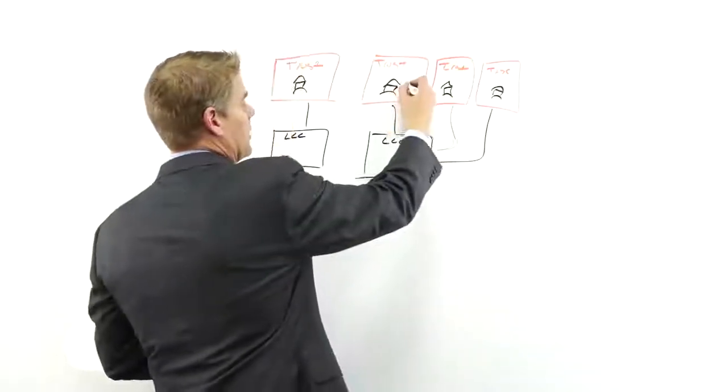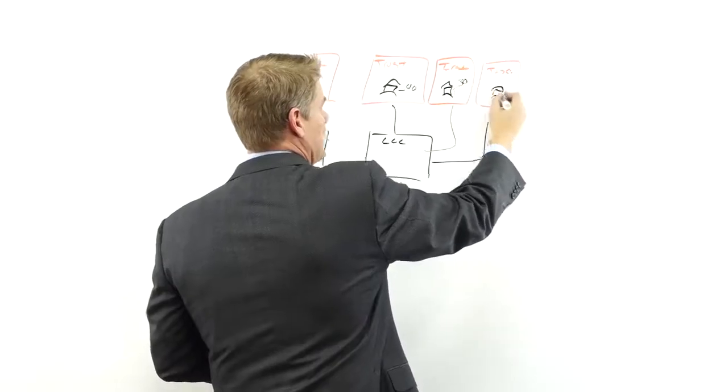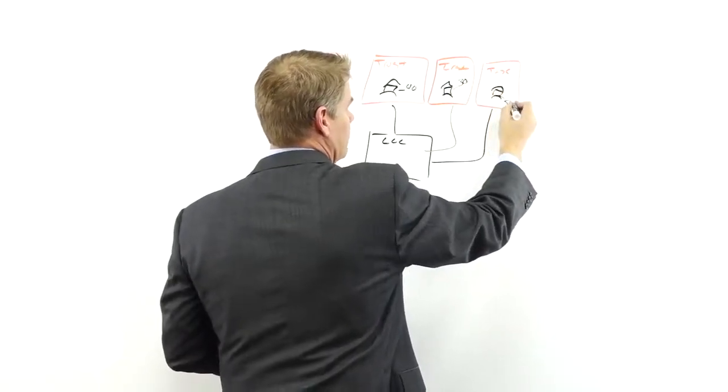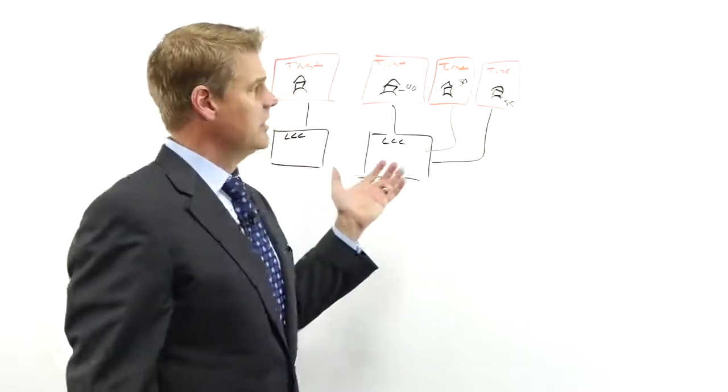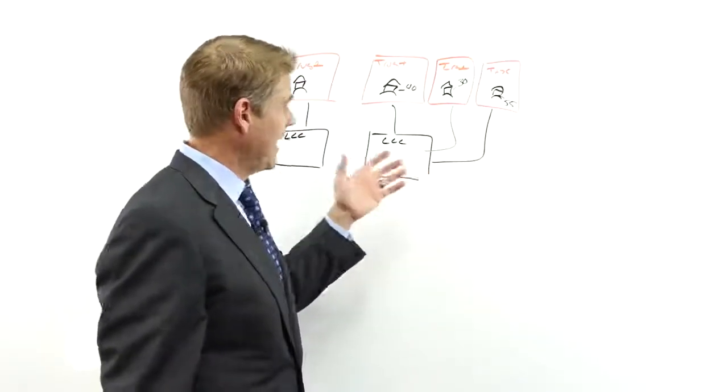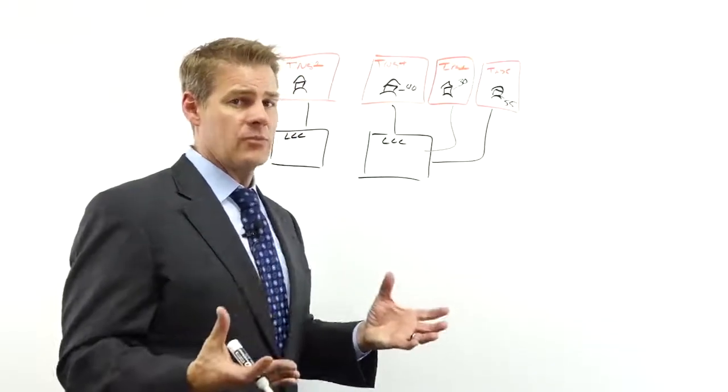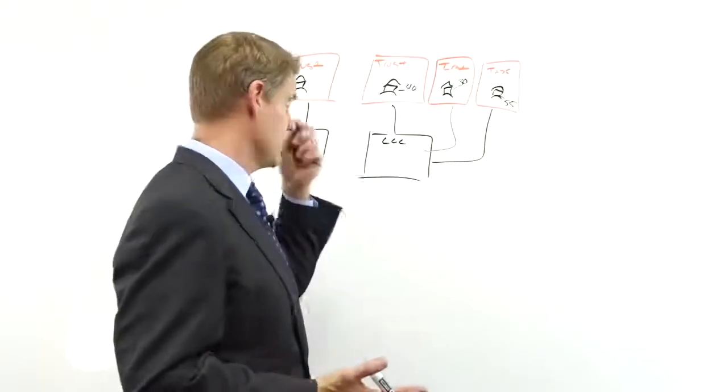Just because you feel that the equity that you have at risk here doesn't warrant additional limited liability companies. For instance, the equity on this property is $40,000 or the value, not the equity, the value. The value on this one is $30,000 and the value over here is $55,000. So you can see here in total, we have about $125,000, $120,000 at risk.